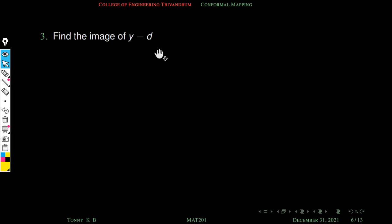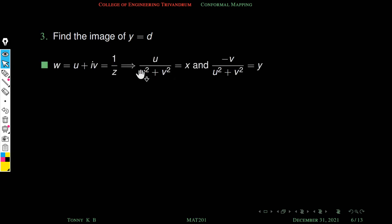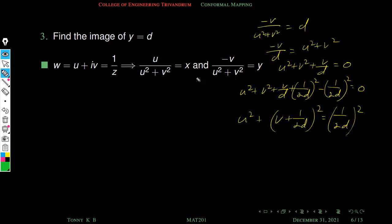Next problem: find the image of y = d under the transformation w = 1/z. Lines y = d are straight lines parallel to the x-axis. Using y = -v/(u² + v²), substituting y = d gives -v/(u² + v²) = d, which rearranges to u² + v² + v/d = 0.